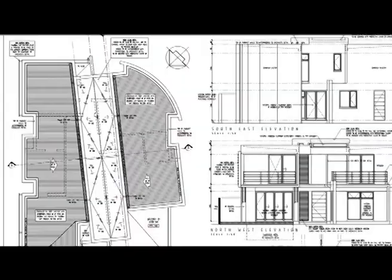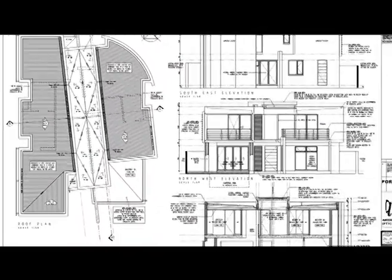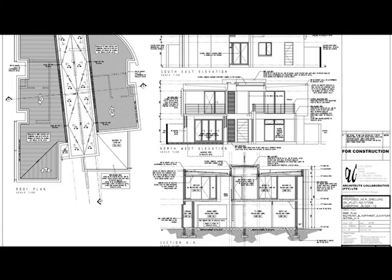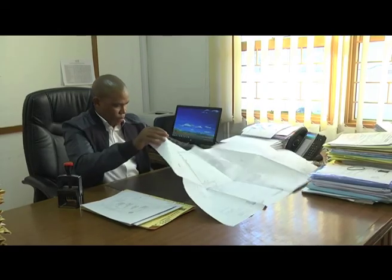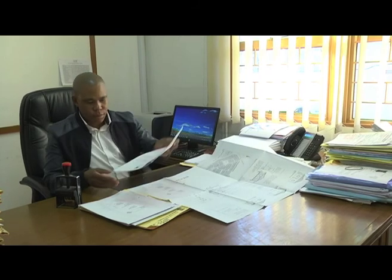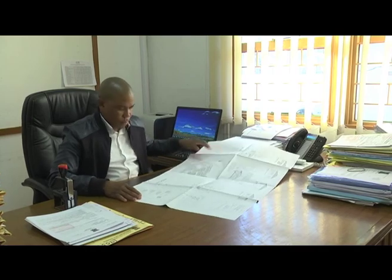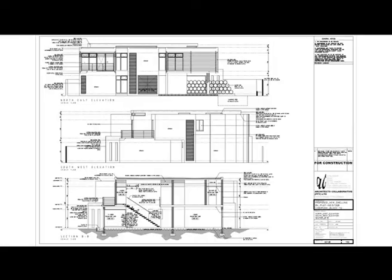Once the drawings have been completed and approved by the client, the consulting team would then have to detail them and submit to council for approval so that they can get building permission. It is important to know that submission to council can only be made by qualified registered personnel, whether it is an architect, an engineer, or an architectural technologist, as would have been registered with the Architects Registration Council.